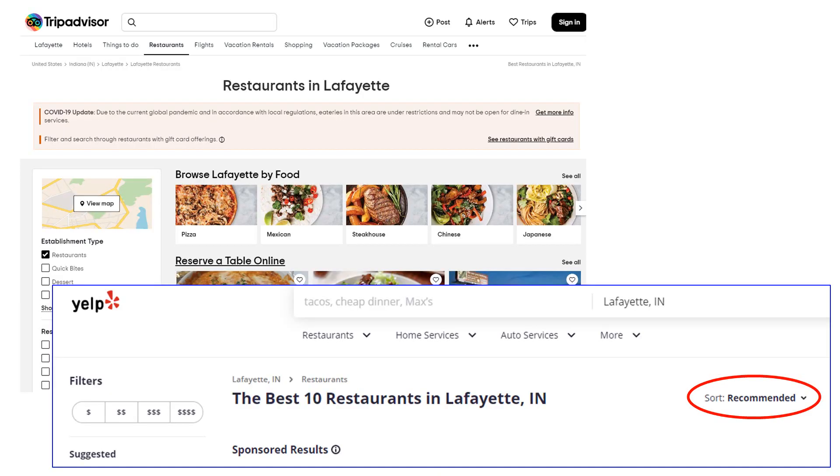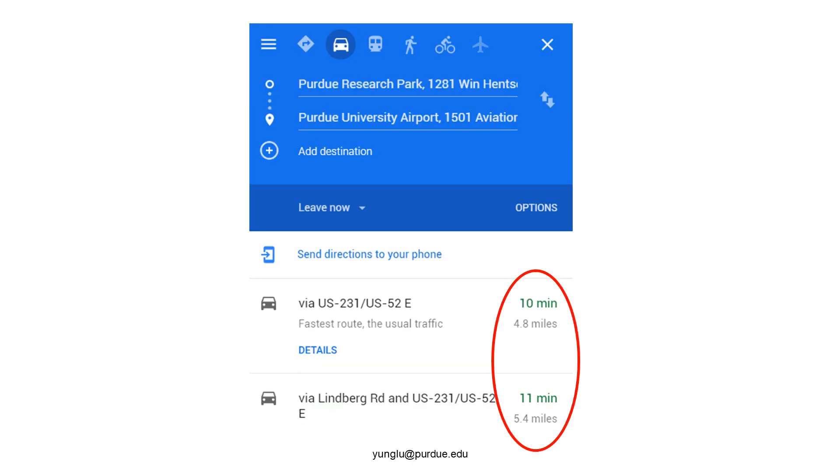If you want to find a restaurant, websites may sort the restaurants by viewers' recommendations. When you use a map service to find routes, the routes are usually sorted by the estimated travel time or distances.